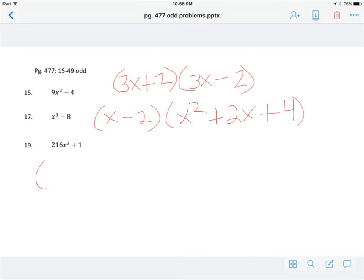Now number 19 is interesting because remember you need two numbers or two terms that are both raised to the third power. So 216x cubed actually will be written as 6x to the third power because 6 to the third power is 216, x to the third power is x cubed, but my u is going to be this whole term of 6x. And then 1 to the third power.